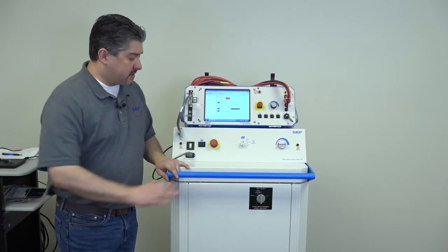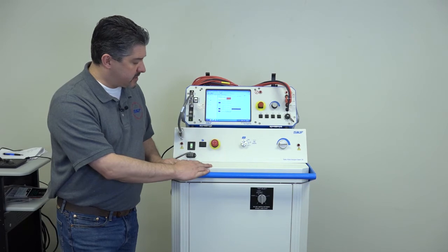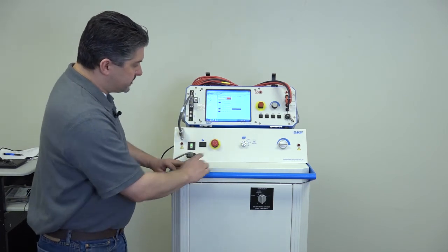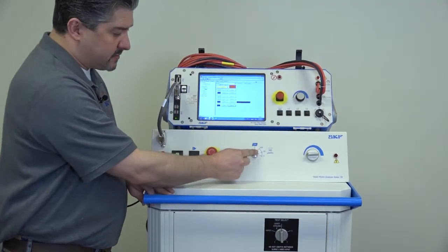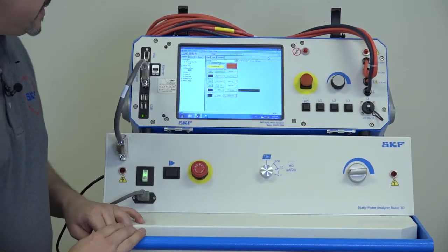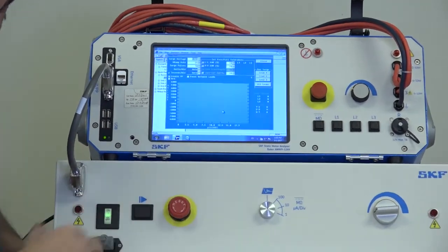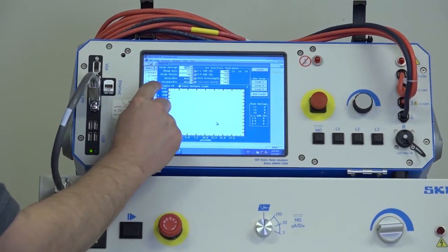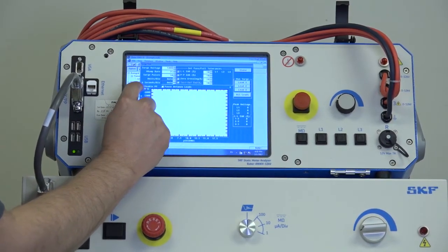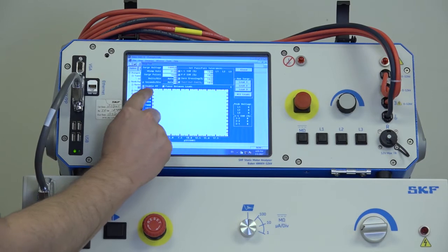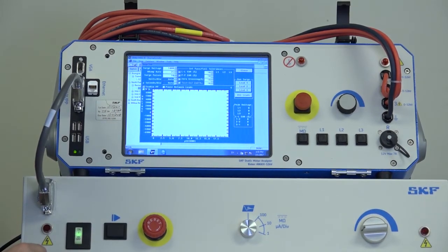Now we're going to demonstrate the use of the power pack to surge test a motor winding. The first thing we want to do is ensure our function selector switch is in the surge test position at 12 o'clock. Once that's been verified, we're going to go into the software setup screen for surge testing and check the enable power pack checkbox. Make sure your test voltage is set appropriately, which you want.